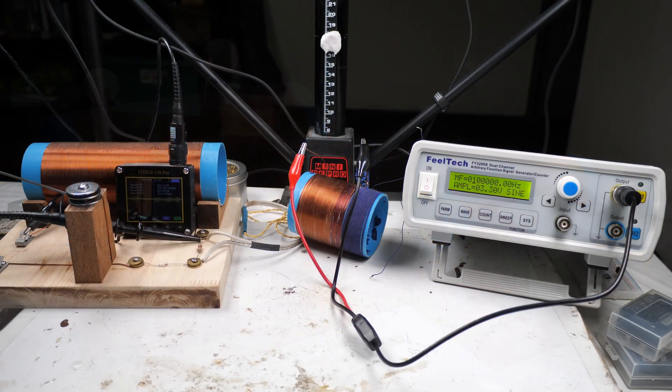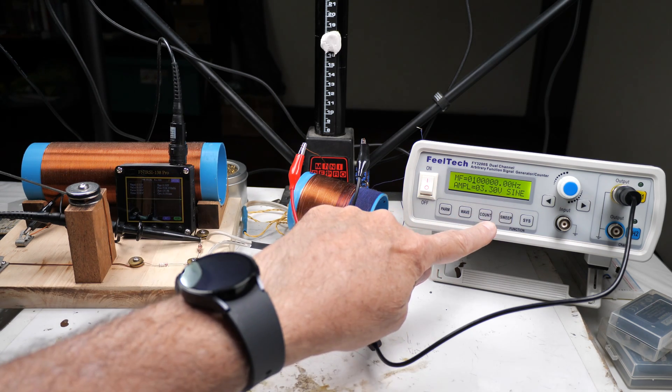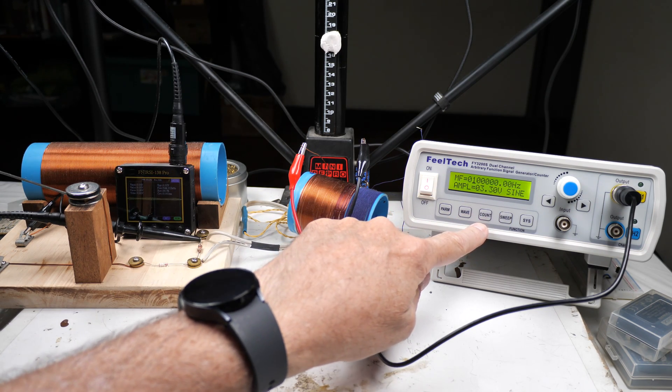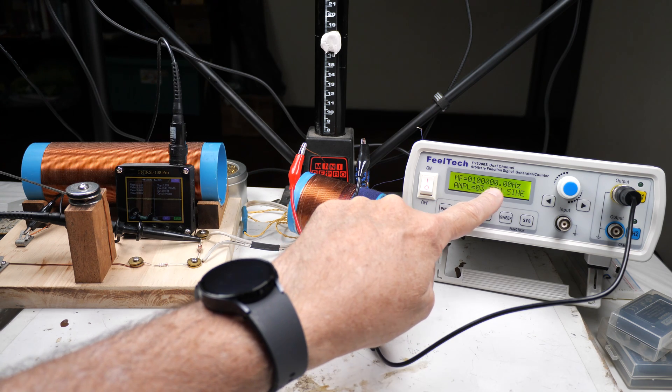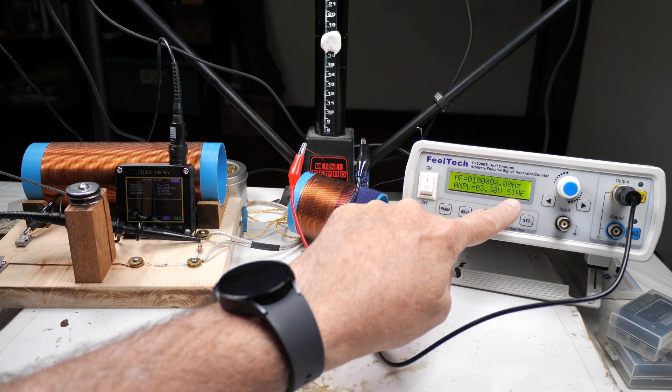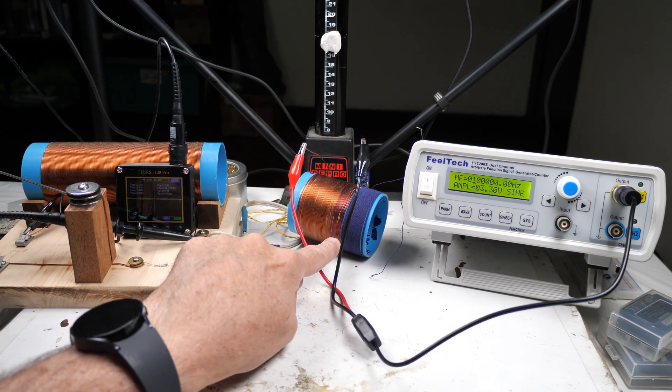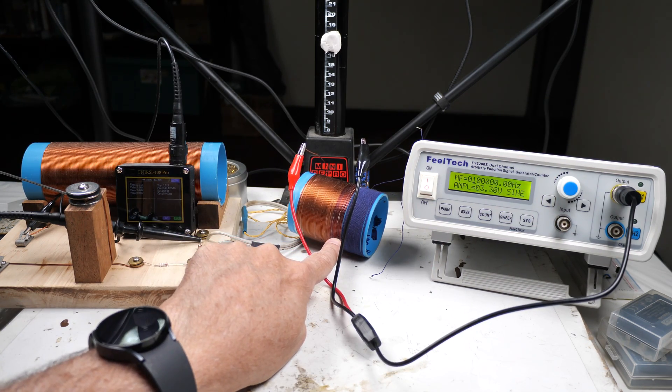First, let's look at our test rig. What we've got going is over here we got a signal generator, and it is set to 100,000 Hertz or 100 kilohertz at 3.3 volts, a sine wave. We're going to take this output and feed it into this coil.